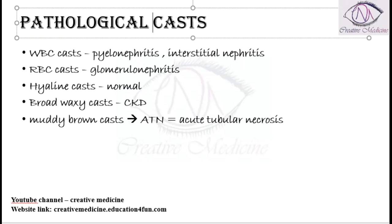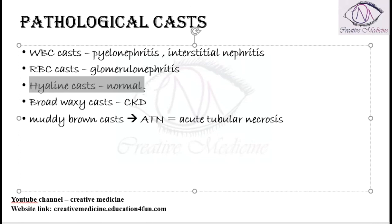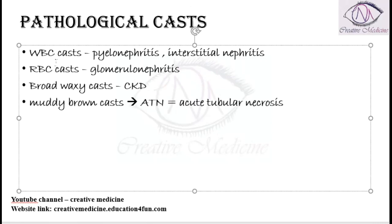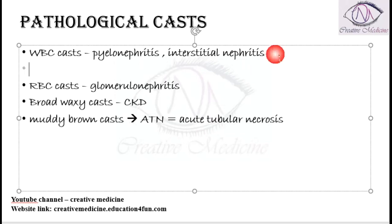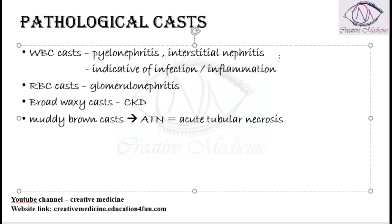The second type are pathological casts. First we have WBC casts, which are formed from white blood cells. WBC casts are present in pyelonephritis and interstitial nephritis, and are indicative of infection or inflammation.